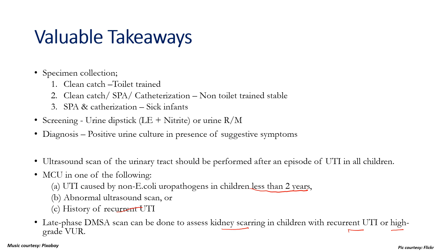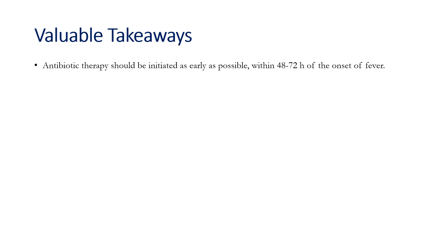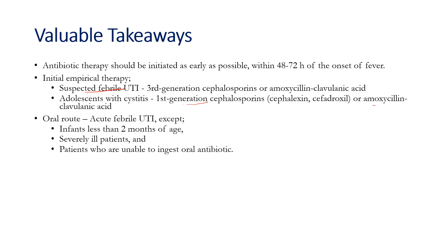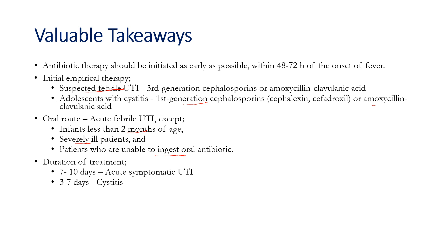Antibiotic therapy should be initiated as early as possible, preferably within 48 to 72 hours of the onset of fever. Initial empirical therapy comprises 3rd generation cephalosporins or amoxiclav in children with suspected febrile UTI, and 1st generation cephalosporins or amoxiclav in adolescents with cystitis. Oral route is preferred in acute febrile UTI, except in patients less than 2 months of age, those who are severely ill, or those unable to ingest oral antibiotics. Duration of treatment is 7 to 10 days in acute symptomatic UTI and 3 to 7 days for cystitis.